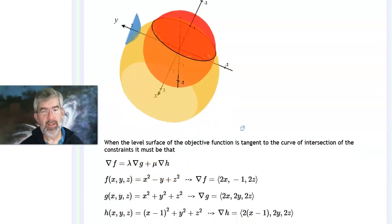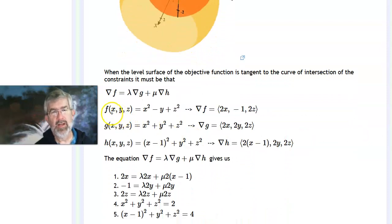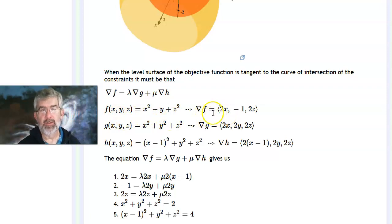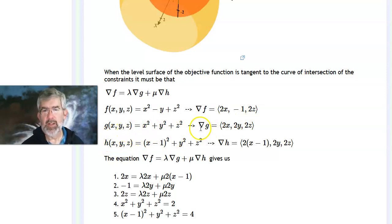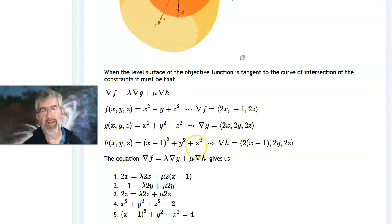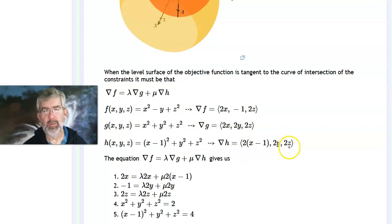To do the calculation: f equals x squared minus y plus z squared, so its gradient is (2x, -1, 2z). For g (first constraint), the gradient is (2x, 2y, 2z). For h (second constraint), taking the gradient gives (2(x-1), 2y, 2z).